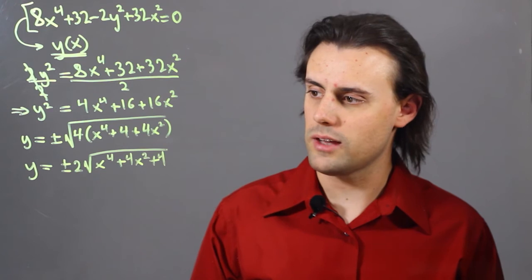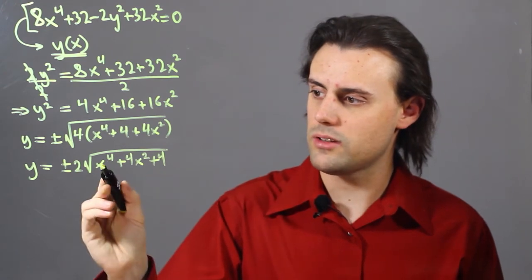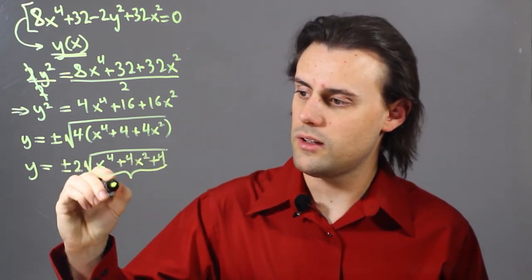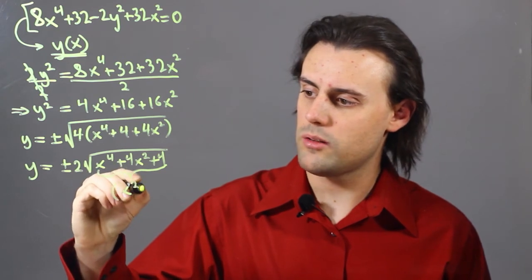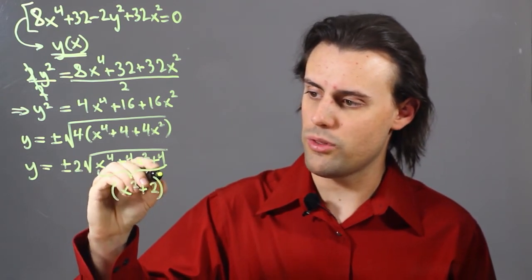And I realize that the argument inside of the square root can be written as x squared plus 2, the whole thing squared.